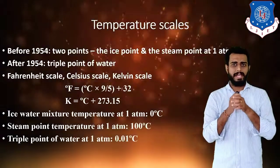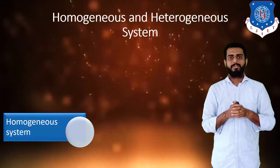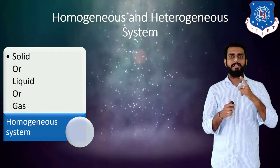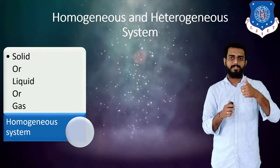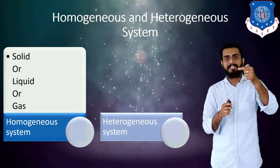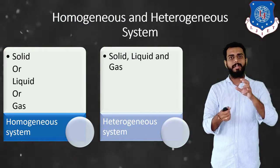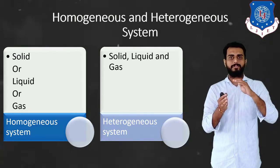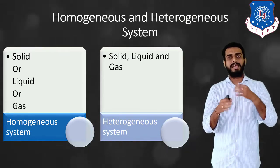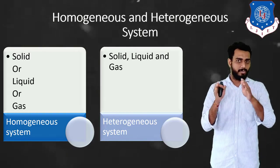For homogeneous and heterogeneous systems: a homogeneous system has only one phase existing — either solid, liquid, or gas. A heterogeneous system has more than one phase existing together, for example a combination of solid and liquid, solid and gas, or solid, liquid, and gas together. Three or more phases coexisting simultaneously constitute a heterogeneous system.